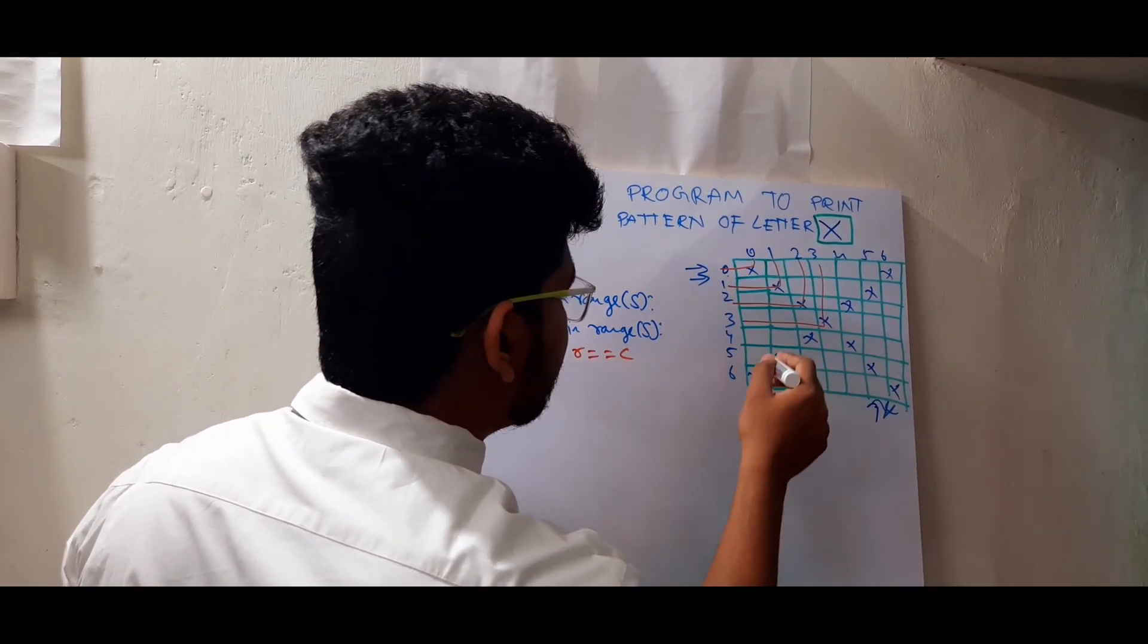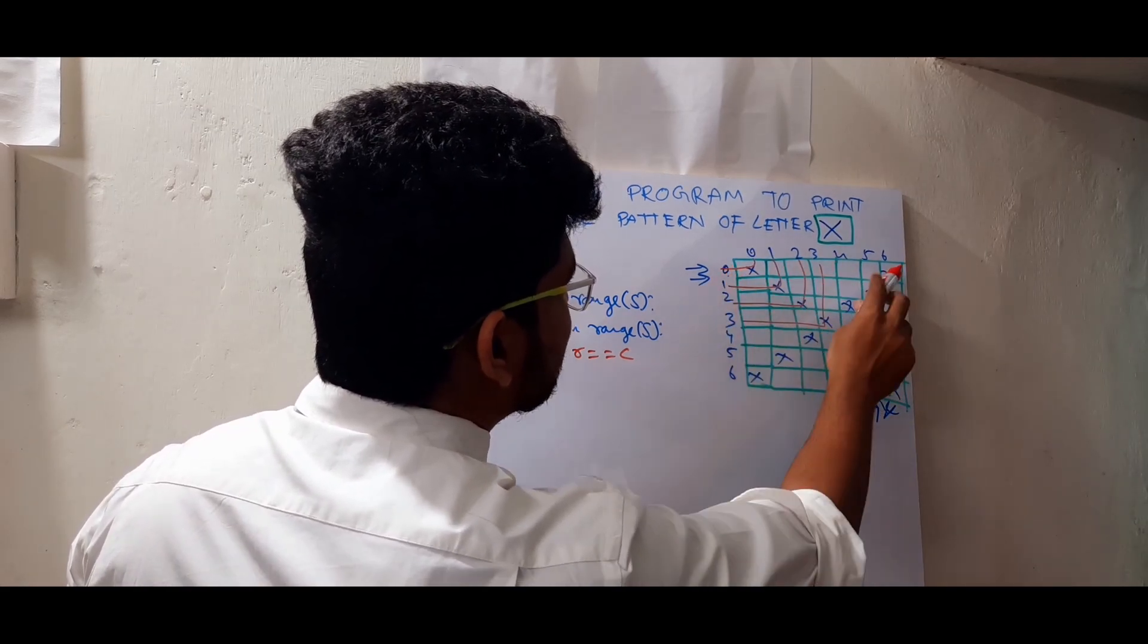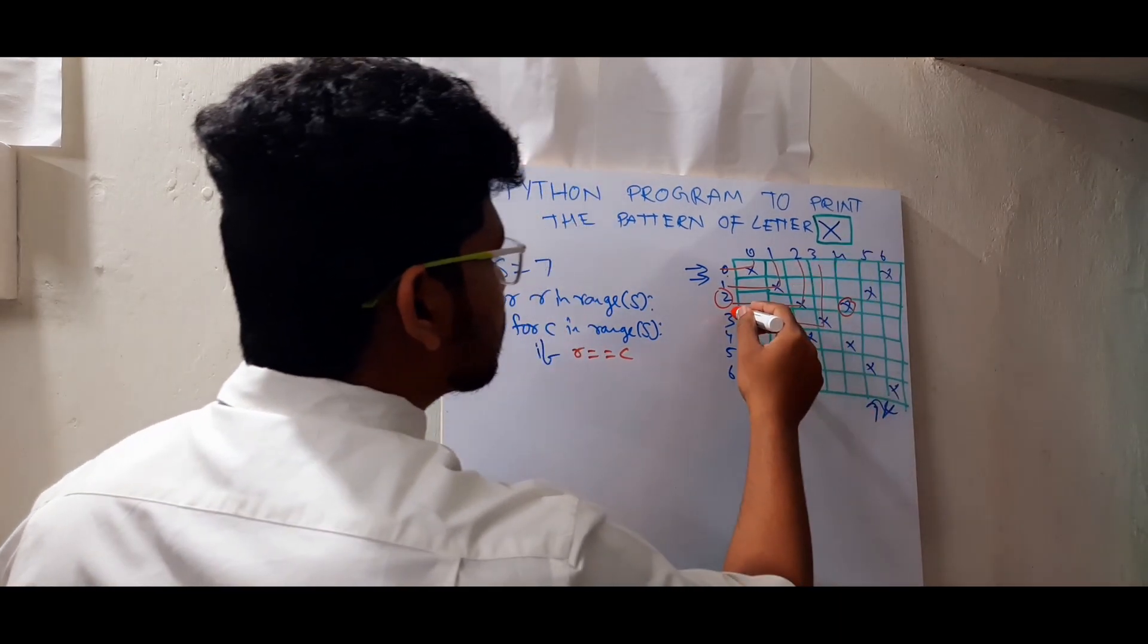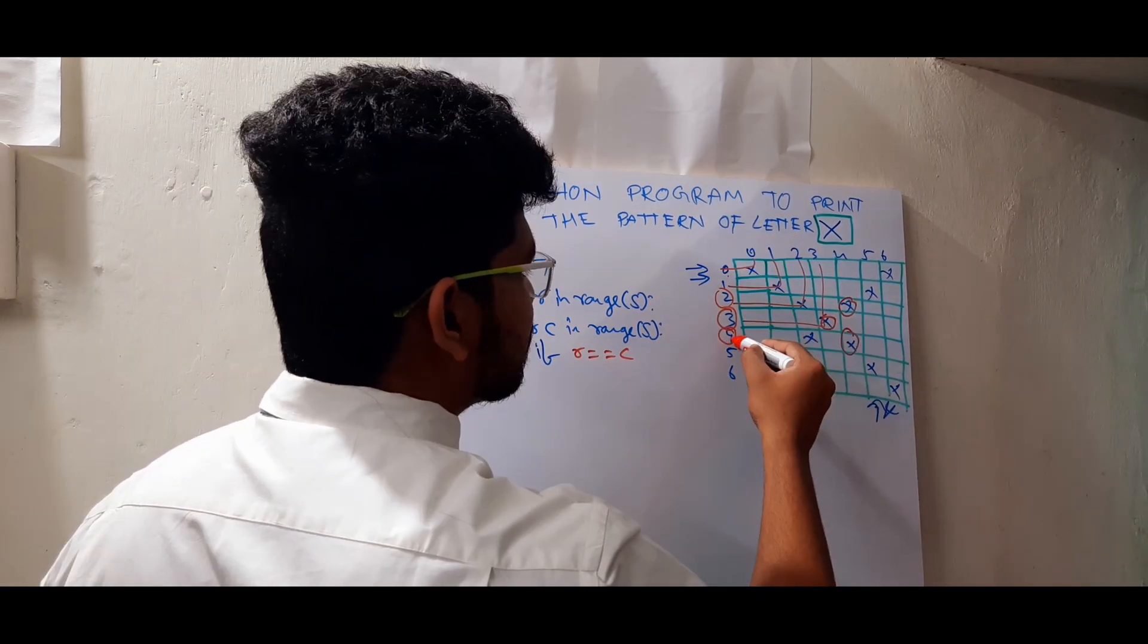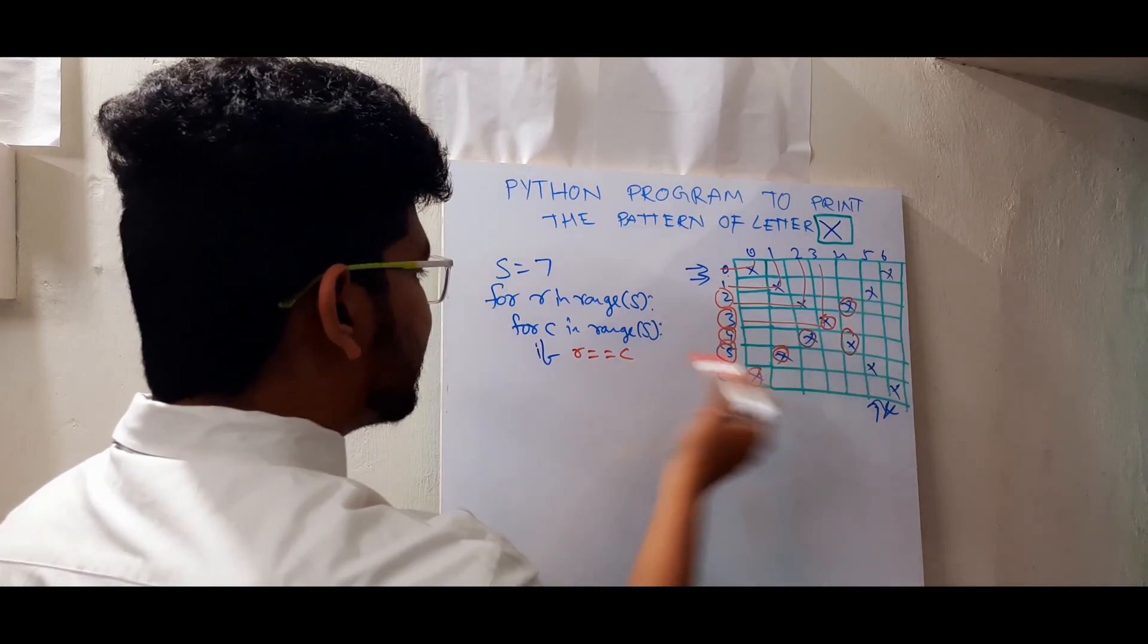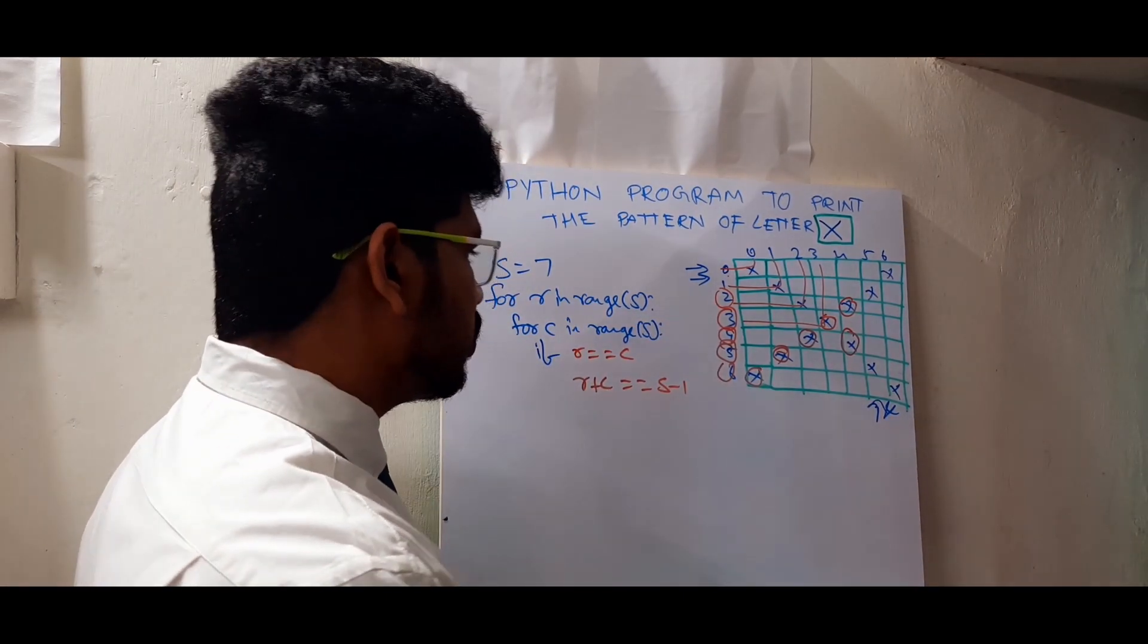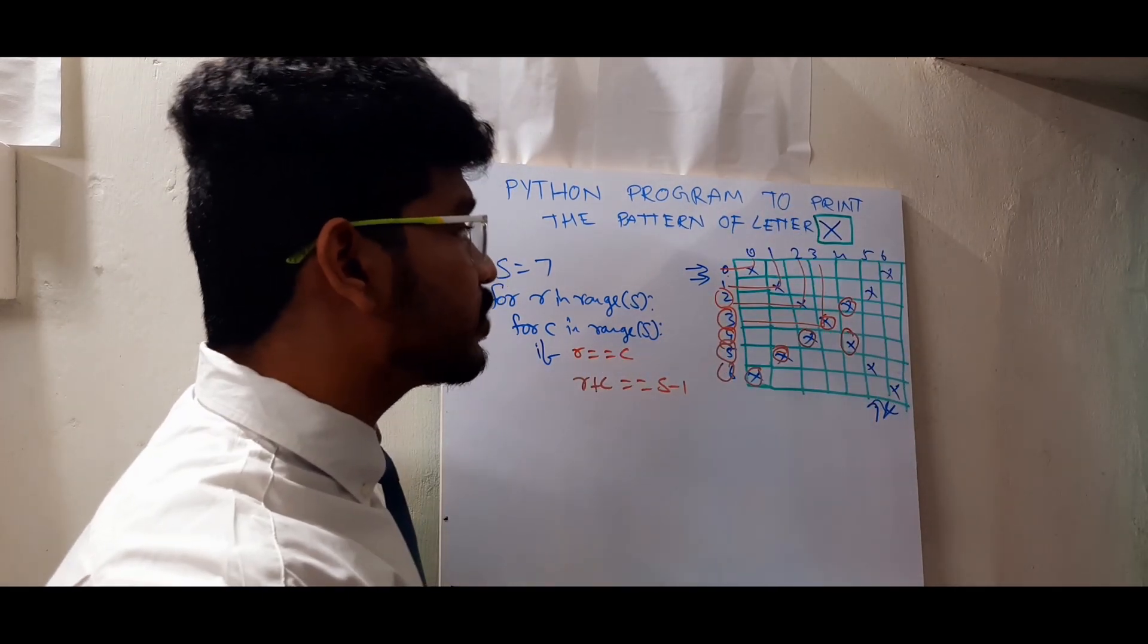And the other condition would be, if you see six plus zero equals six, five plus one equals six, two plus four equals six, three plus three equals six. However, it's covered in this slanting line. Four and two equals six, five and one equals six, six and zero equals six. So that is another condition. That means row plus column equal to equal to S minus one. So these are the two conditions. When we write those two conditions, we achieve these two slanting lines intersecting each other. Looks like an X.